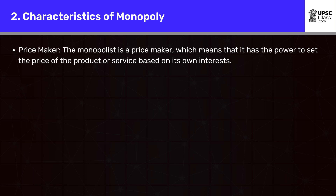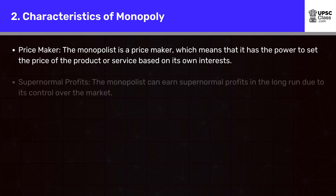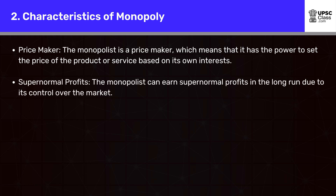Price maker: the monopolist is a price maker, which means that it has the power to set the price of the product or service based on its own interests. Supernormal profits: the monopolist can earn supernormal profits in the long run due to its control over the market.